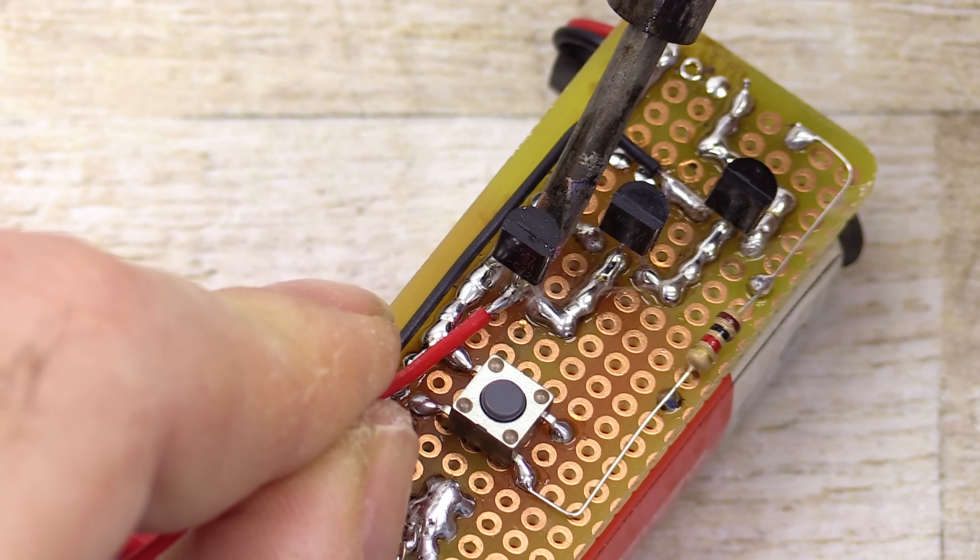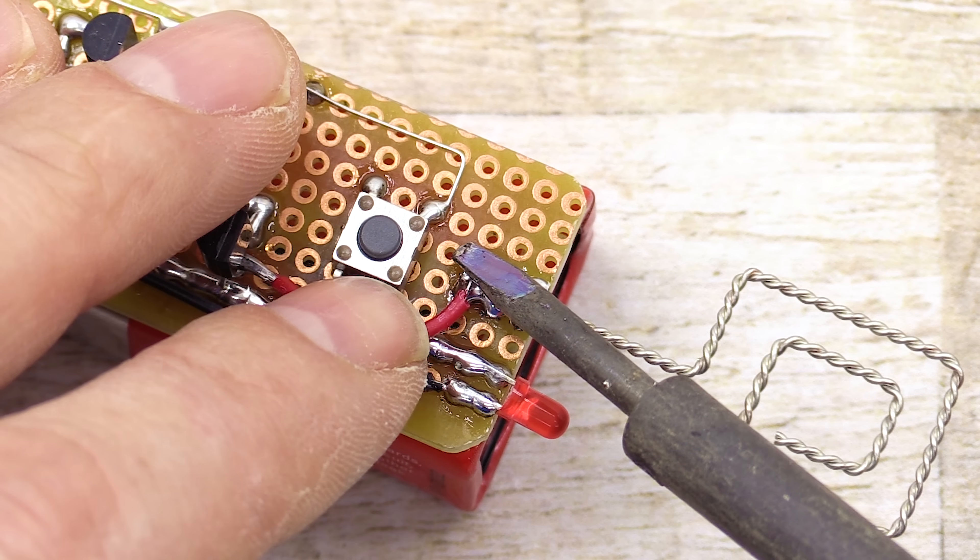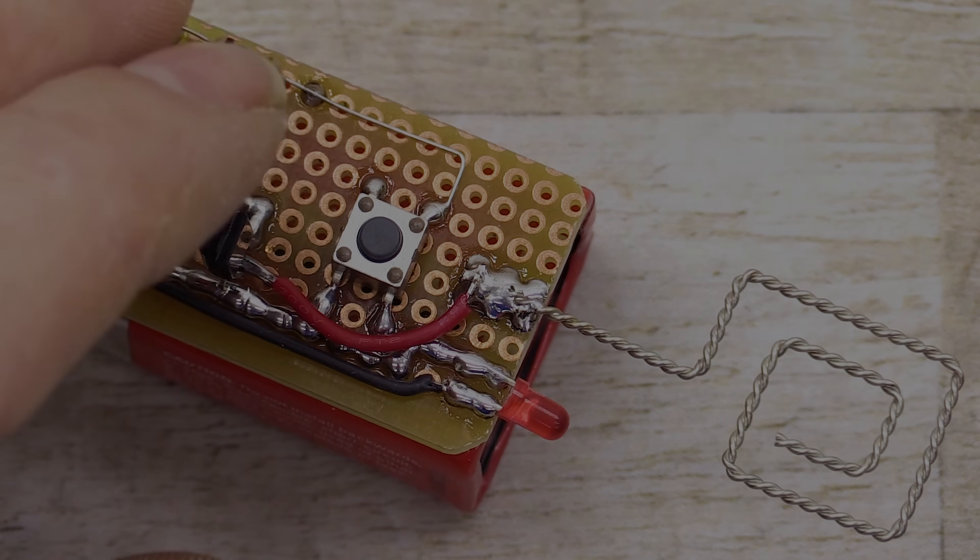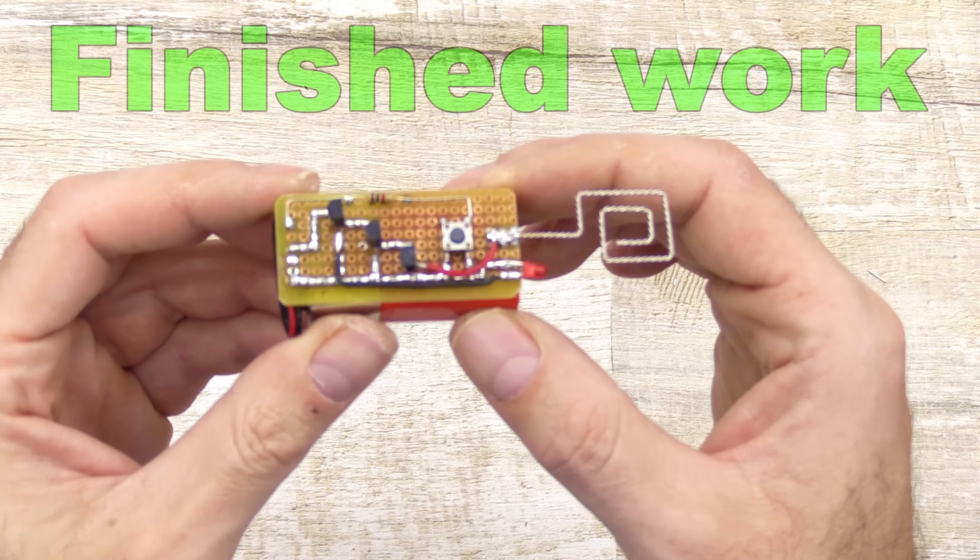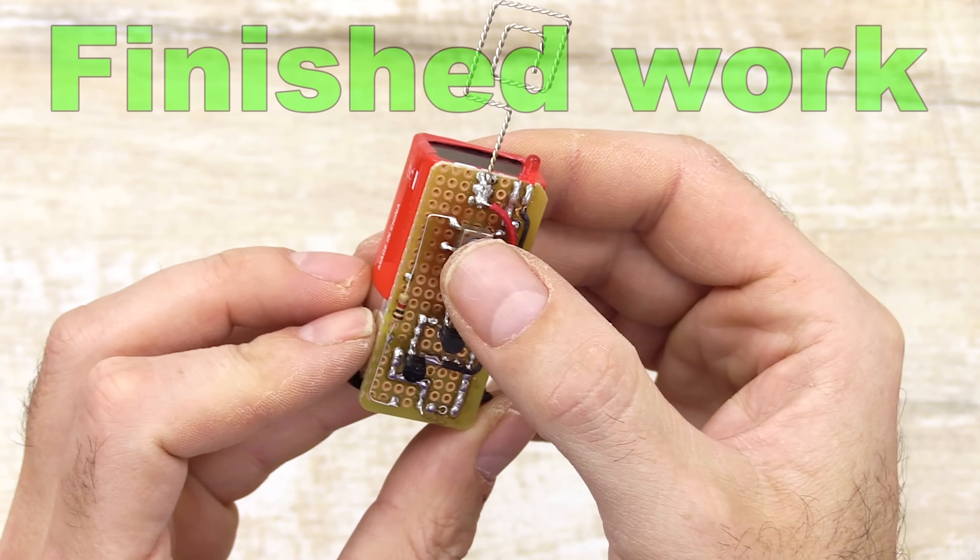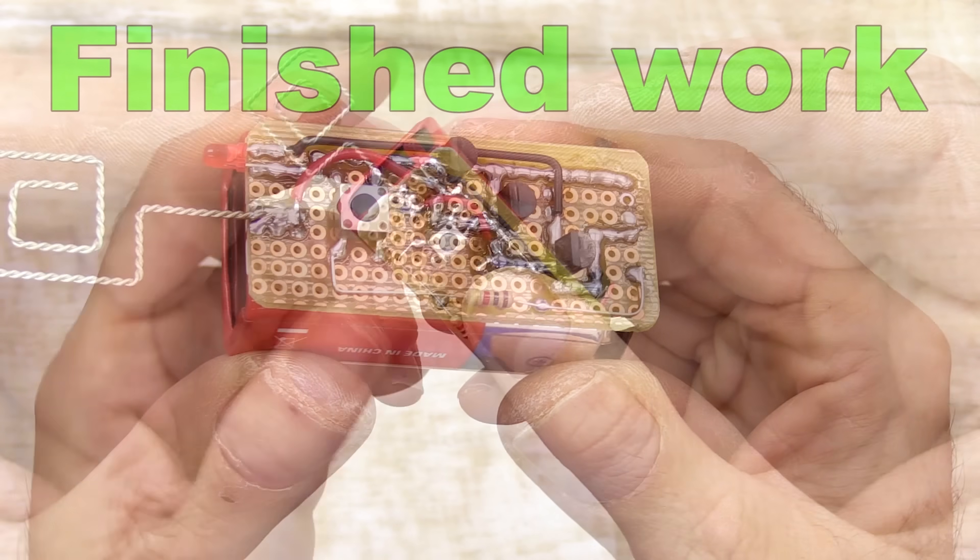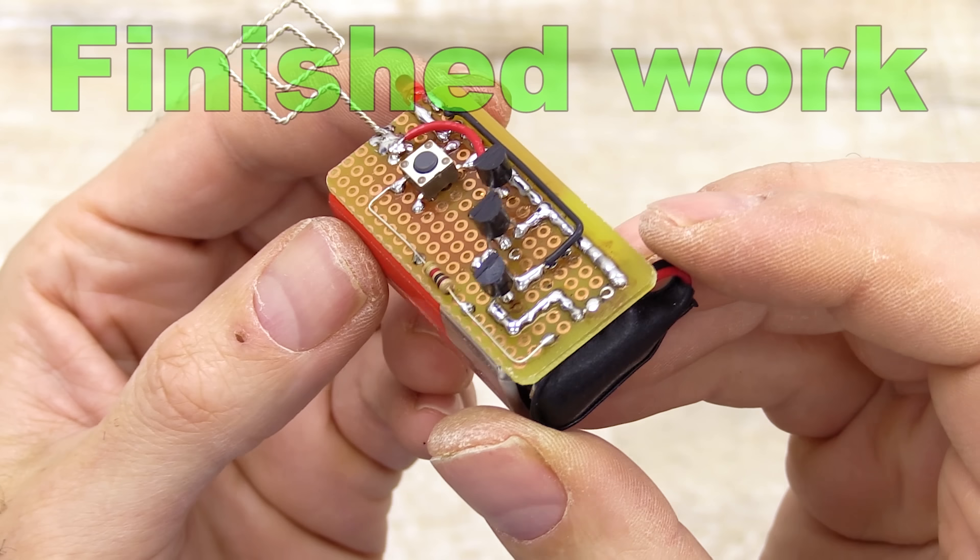To complete the circuit, I'll connect the antenna to the emitter of the first transistor. The live wire detector is now fully assembled. Before testing it, let me briefly explain how the circuit works.